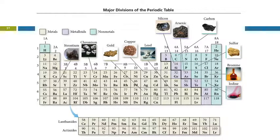In the upper right corner, we have the non-metals. There is a dark line that goes through here, and that's the dividing line between the metals and the non-metals.